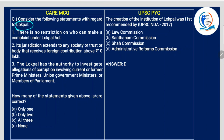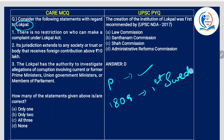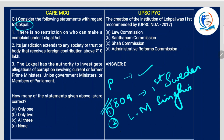Consider the following statements with regard to Lokpal. You have to know some basics: Lokpal is a statutory body, and it became one because of the people's movement headed by Anna Hazare. Some background: the office of ombudsman was first established in Sweden in 1809. The terms 'Lokpal' and 'Lokayukta' were coined by L.M. Singvi. The Administrative Reforms Commission constituted in 1966 actually recommended the office of Lokpal and Lokayukta.